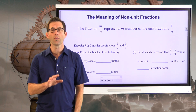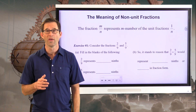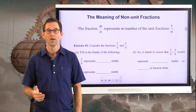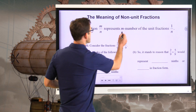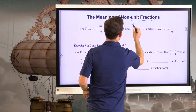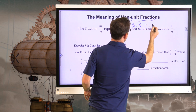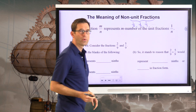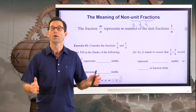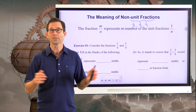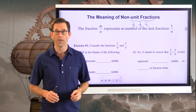The first thing I want to talk about is the meaning of non-unit fractions. Before we do that, it might be smart to talk about what a unit fraction is. A unit fraction is something where there's a one in the numerator — something like one-half, one-third, one-seventh, etc. Unit fractions are important because fractions measure quantity. If I took a pizza and broke it up into seven pieces and took one of them, I would have taken one-seventh of a pizza.